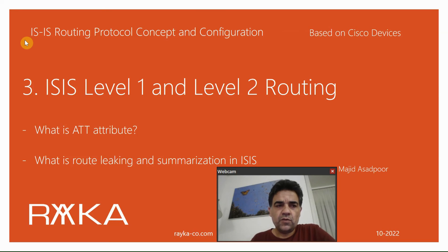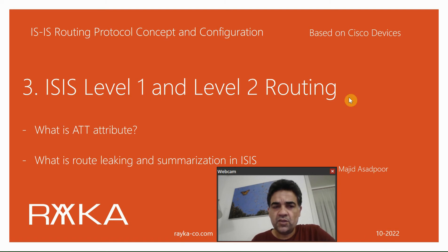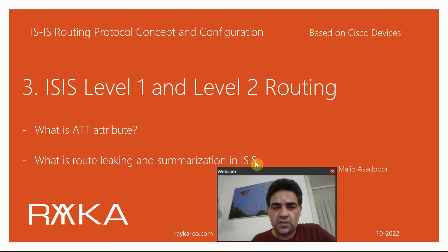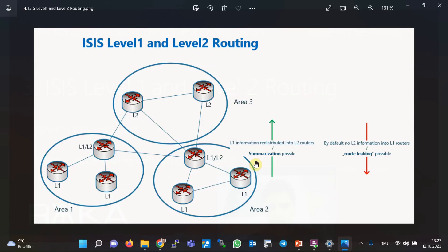Welcome to another video of the course on routing protocol concepts and configuration. In this section, I will talk about ISIS Level 1 and Level 2 routing, which is critical knowledge required to understand how routing works in the ISIS protocol. We will also introduce some topics: the ATT attribute, route leaking, and summarization in ISIS routing, which will be discussed in detail in the next sections.